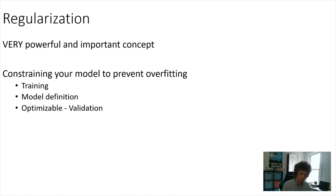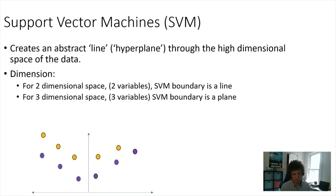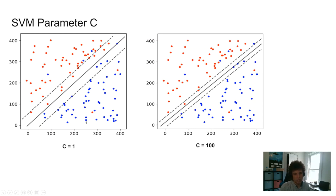For SVM and logistic regression, there is a specific regularization term that controls how much you prevent overfitting. In SVM this is the C parameter. Looking at scikit-learn examples: with C=1 (less regularization), the model overfits to small outlier points; increasing regularization strength reduces sensitivity to outliers and produces a better generalized boundary.